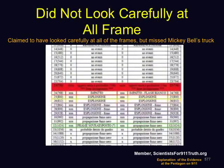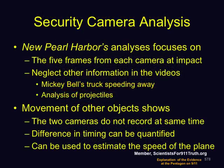In the New Pearl Harbor, they claim to have looked at all the frames and found differences in only one of them, but in fact there are many more frames outside the range they were looking at. Their analysis focuses on only the five frames from each camera at impact, neglecting other information in the videos — for instance, they ignore Mickey Bell's truck that was speeding away, and they neglect an analysis of projectiles that are different in the two cameras. The movement of these other objects shows that the two cameras do not record simultaneously, the difference in timing can be quantified, and it can be used to estimate the speed of the plane.